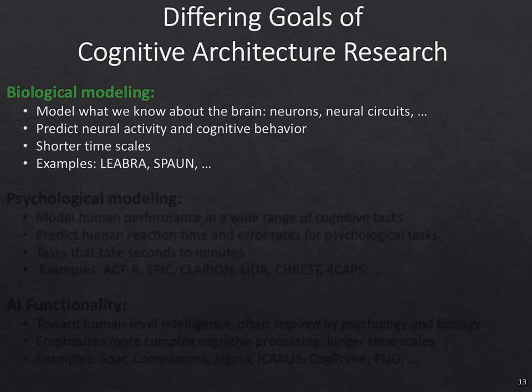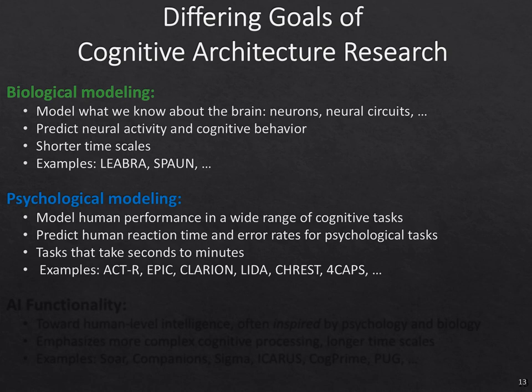There's also interest in psychological modeling — not thinking at the neural level, but asking how can we build a system that has the same behavior as humans, with the same strengths and weaknesses, giving us an understanding of why there are weaknesses in human reasoning. These systems are not to build a single model on one task, but to perform human tasks across a wide range of cognitive tasks. Usually the goal is to predict things like human reaction time and error rates for psychological tasks that take seconds to minutes.